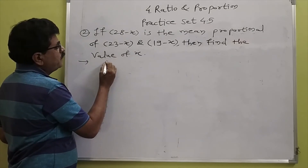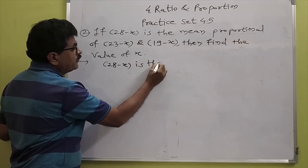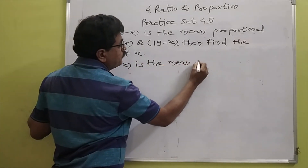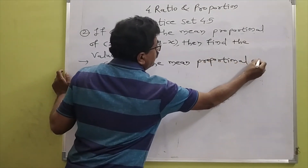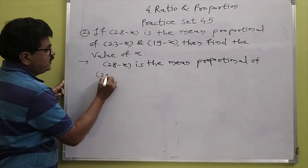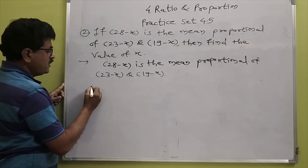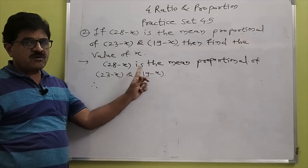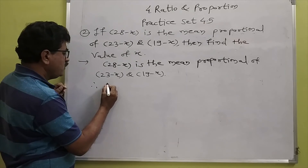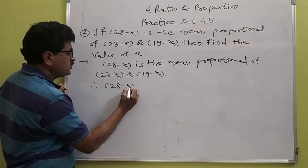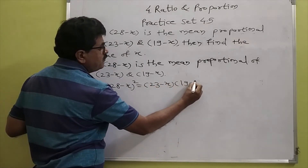Given: 28 minus X is the mean proportional of 23 minus X and 19 minus X. Therefore, B squared equals A into C, so 28 minus X whole squared equals 23 minus X into 19 minus X.